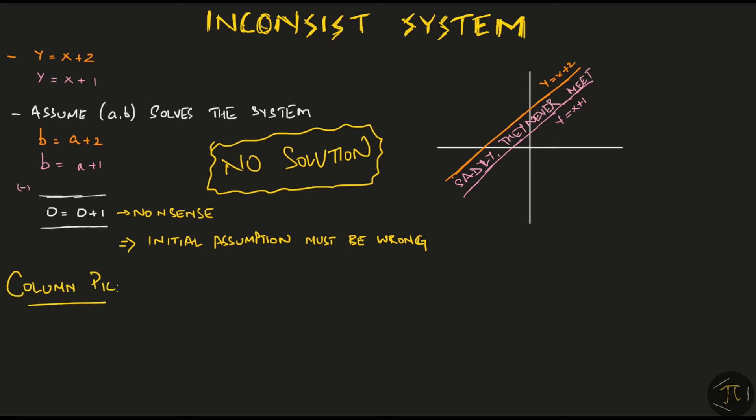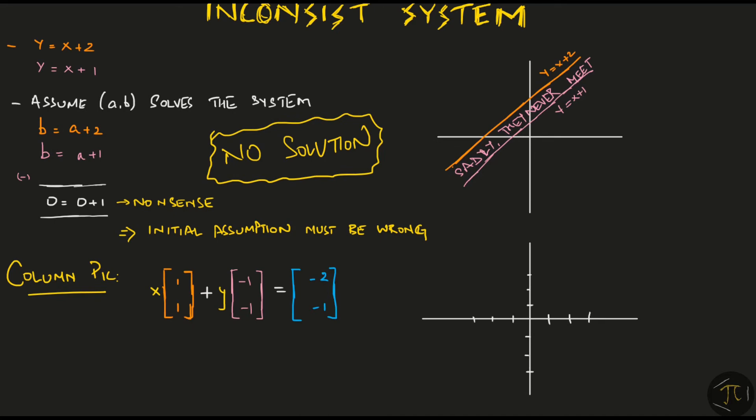The column picture says that x times the first vector plus y times the second vector should give me the output vector. These orange and pink are my input vectors,